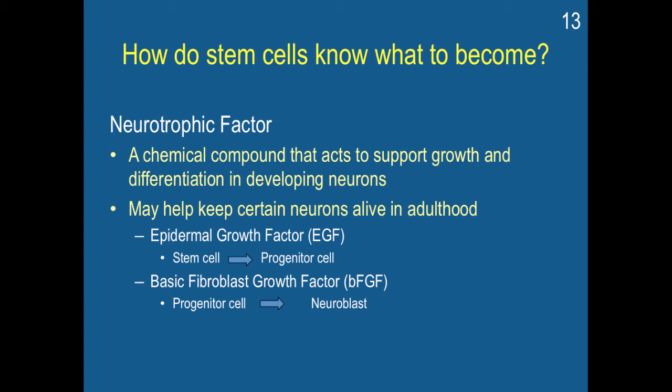Another factor that influences the growth of stem cells is a neurotrophic factor — a chemical compound that acts to support growth and differentiation in developing neurons. Neurotrophic factors may help keep certain neurons alive in adulthood. For example, an epidermal growth factor can tell a stem cell to turn into a progenitor cell, and basic fibroblast growth factors can tell a progenitor cell to turn into a neuroblast. These particular compounds arrive at certain times and tell the cell what to turn into.